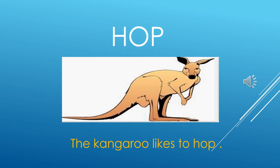Now the next one — the word we have taken is Hop. So what is the sentence? The kangaroo likes to hop. Can you see this animal? He is called the kangaroo. The kangaroo likes to hop. So we have learned a few words and sentences with Op words.